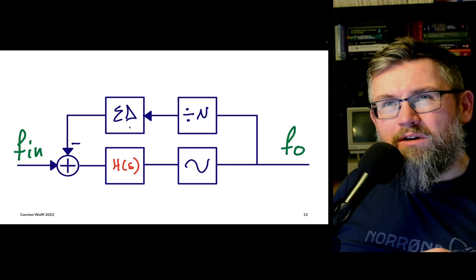There are also digital PLLs these days that move the loop filter into the digital domain, using a digitally controlled oscillator and a time-to-digital converter to transfer the output frequency into a digital domain for a digital loop filter — a very interesting concept. I'll put the link to the repository in the comments below. Thanks for listening today — I hope you enjoyed it and that it inspired you to look more into PLLs. It's a really cool circuit. Subscribe, like, and post any questions in the comments below.